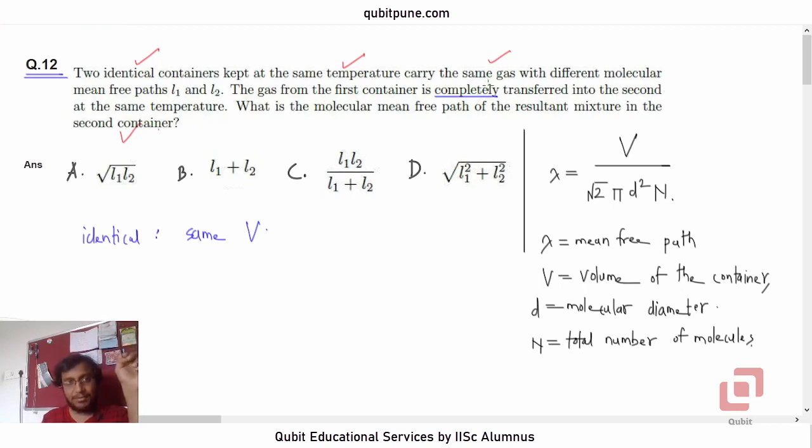The significance of the term same gas is that the molecular diameter is the same. And root 2 and pi are anyways constant. So under these conditions we can say that lambda is inversely proportional to N.